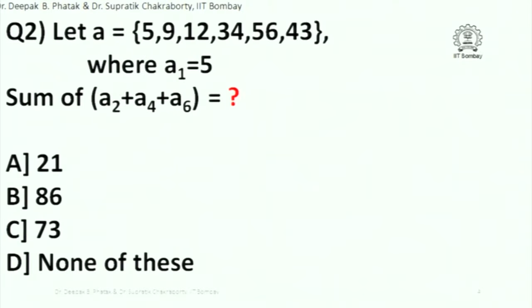This formulation of the question is not related to C++ implementation. This is the standard mathematical notation that you would use while describing an array. An array A, for example, is simply described as A equal to the set of values. There are a total of six values: 5, 9, 12, 34, 56, 43.